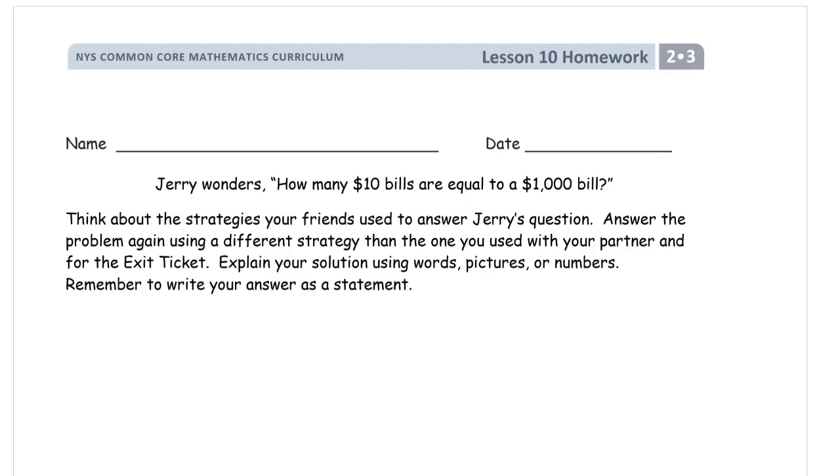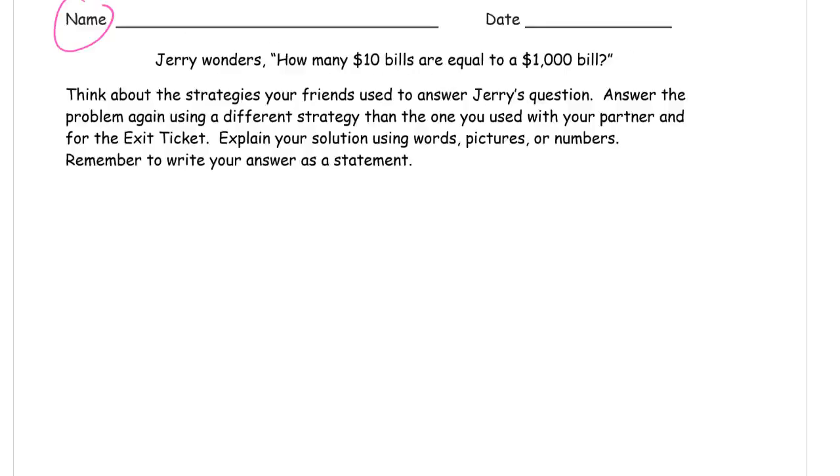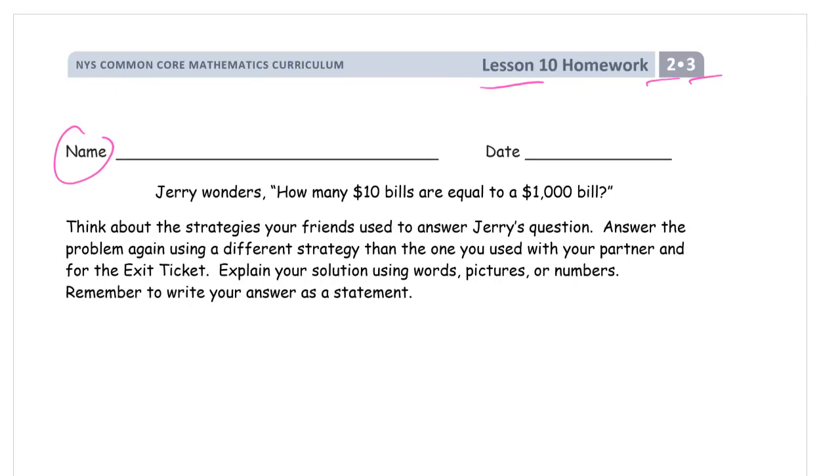Welcome to the homework for lesson 10. This is grade 2, module 3. Write your name here. And our question is, we just have one page of one puzzle to do. And it should be a familiar one if you did this lesson in class recently. Jerry wonders, how many $10 bills are equal to a $1,000 bill? Think about the strategies your friends used to answer Jerry's question. Answer the problem again using a different strategy than the one you used with your partner and for the exit ticket. Explain your solution using words, pictures, or numbers. Remember to write your answer as a statement.